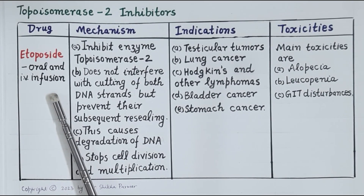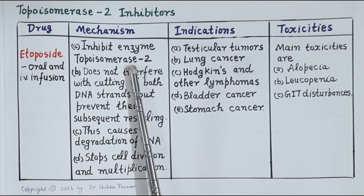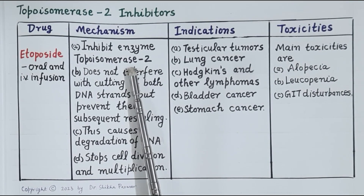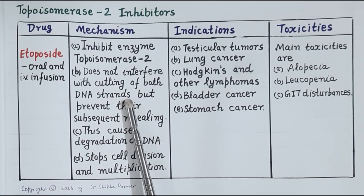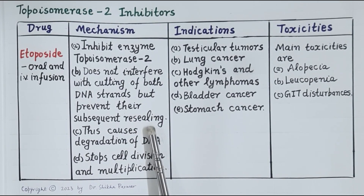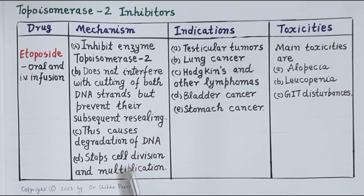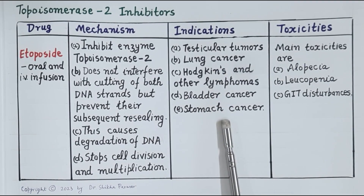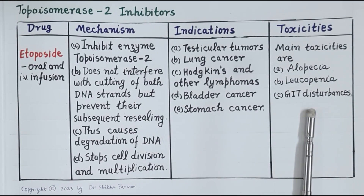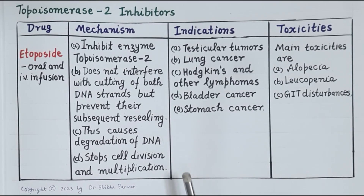Etoposide is a topoisomerase 2 inhibitor. It is given orally as well as by infusion. Etoposide inhibits topoisomerase 2. As already studied, topoisomerase 2 cuts both DNA strands, removes supercoils, and reseals both cut DNA strands. Etoposide does not interfere with the cutting of both DNA strands but prevents their subsequent resealing, causing cutting and degradation of the DNA, thereby stopping cell division and multiplication. Etoposide is used in testicular tumors, lung cancer, Hodgkin and other lymphomas, and bladder and stomach cancer. The main toxicities are alopecia, leukopenia, and gastrointestinal disturbances.